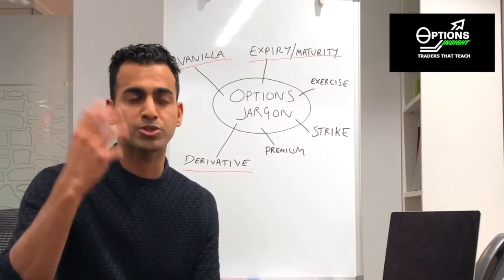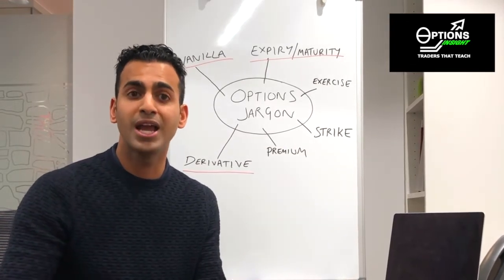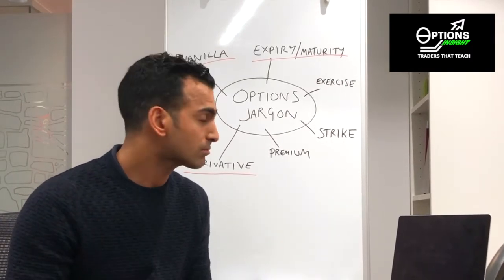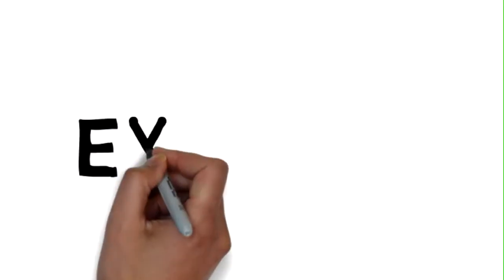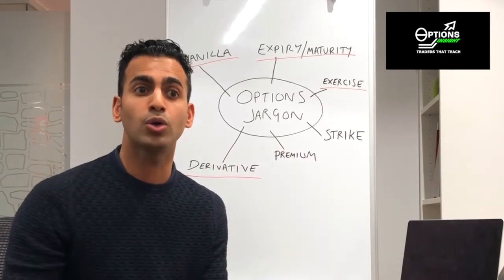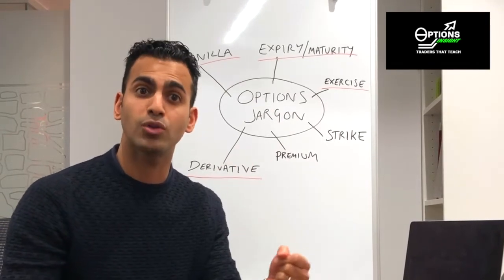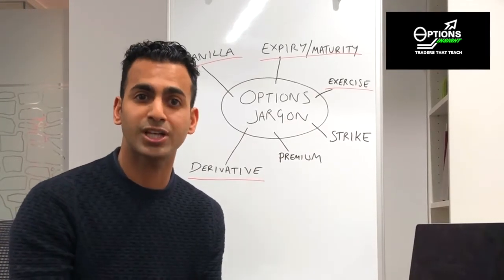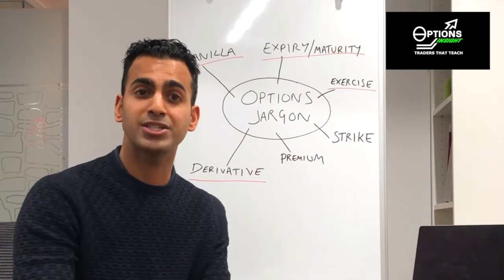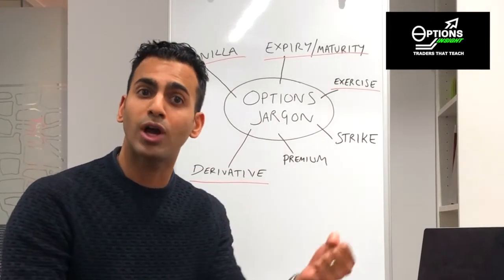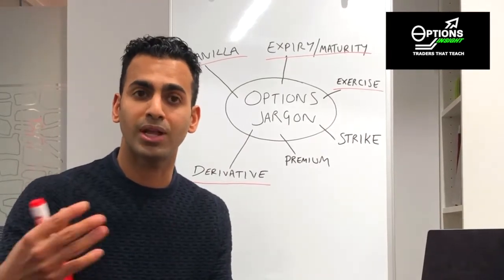When you talk about options, you always ask the question: what's the expiry of that option? That option will cease to exist after that expiry date passes. The next term is exercise. When you decide to actually use your option to buy or option to sell, and you go ahead and actually buy or sell that stock, that is called exercising your option. You can exercise that option either on the expiry date, or in some cases at any time between the day you bought it and the expiry date.